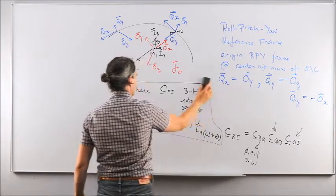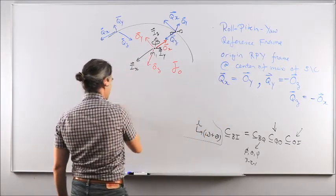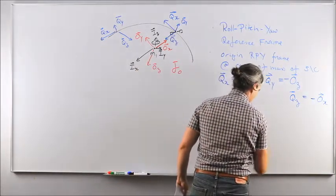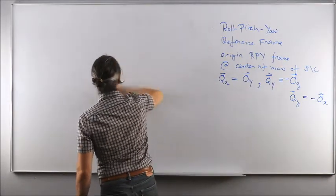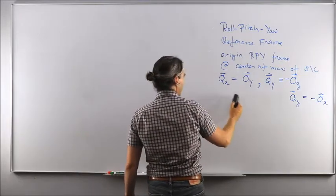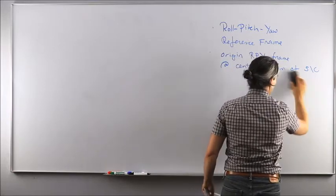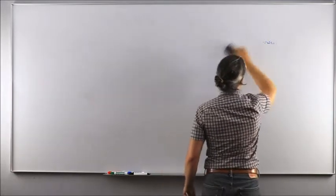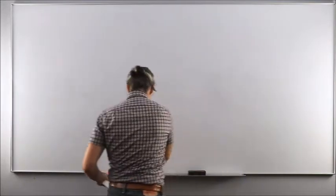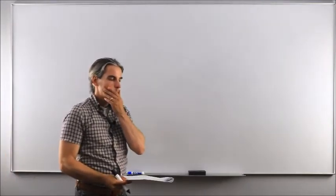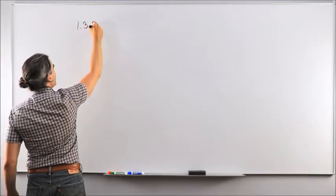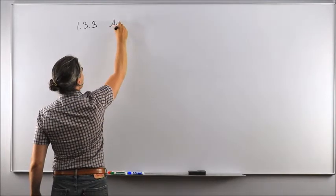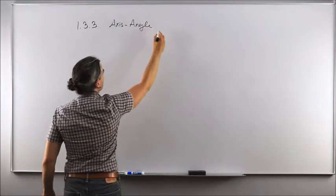All in all, Euler angles are a neat and elegant way to represent spacecraft attitude. The main benefit compared to using the attitude matrix with nine entries is that only three individual angles are needed. Now we've looked at DCM and Euler angles; the third way to represent attitude in section 1.3.3 is the axis-angle representation.